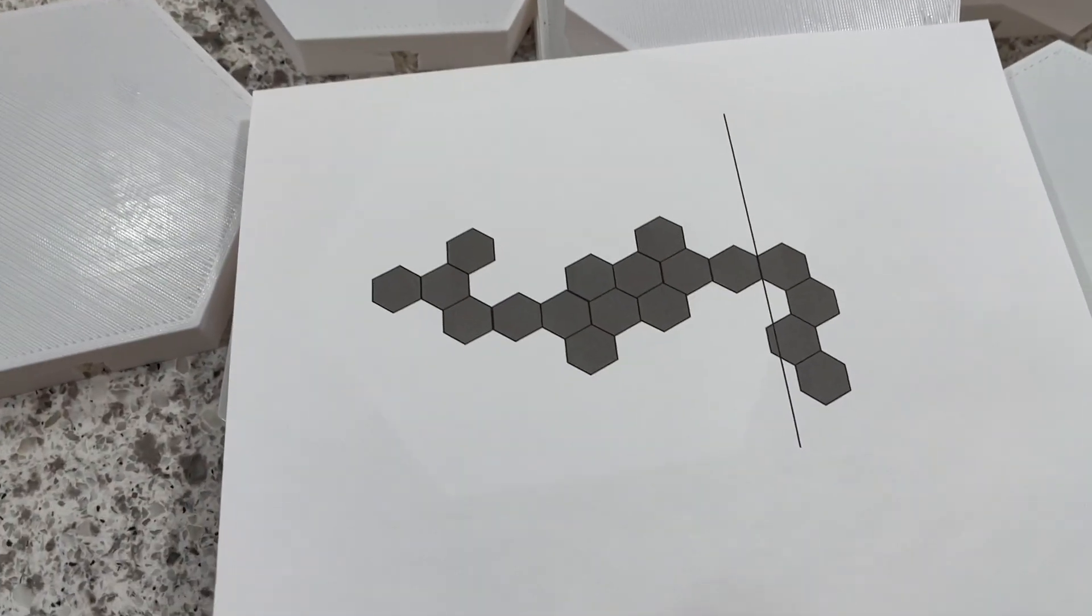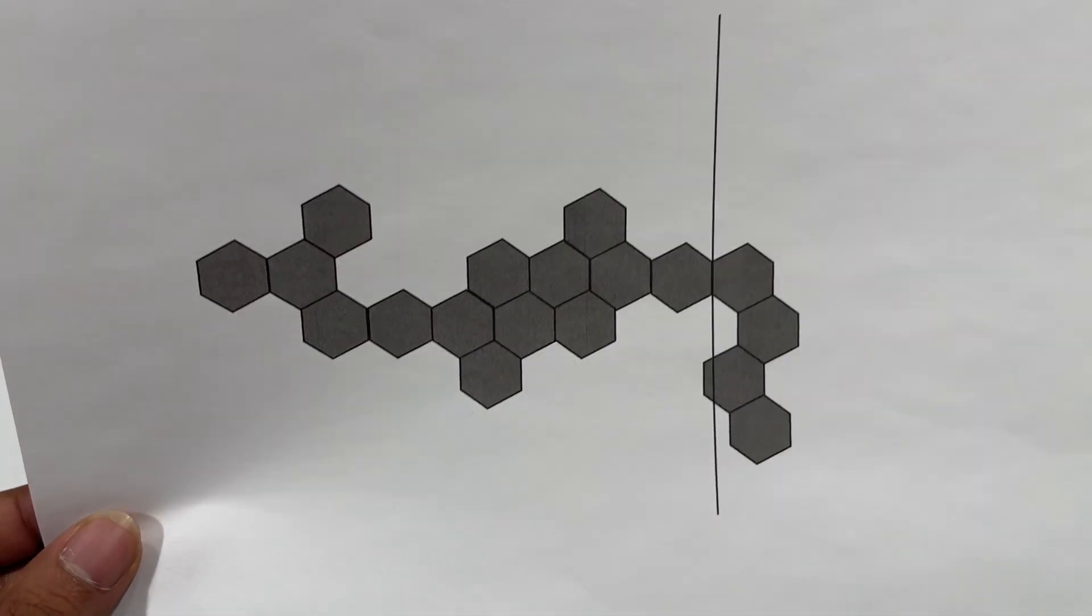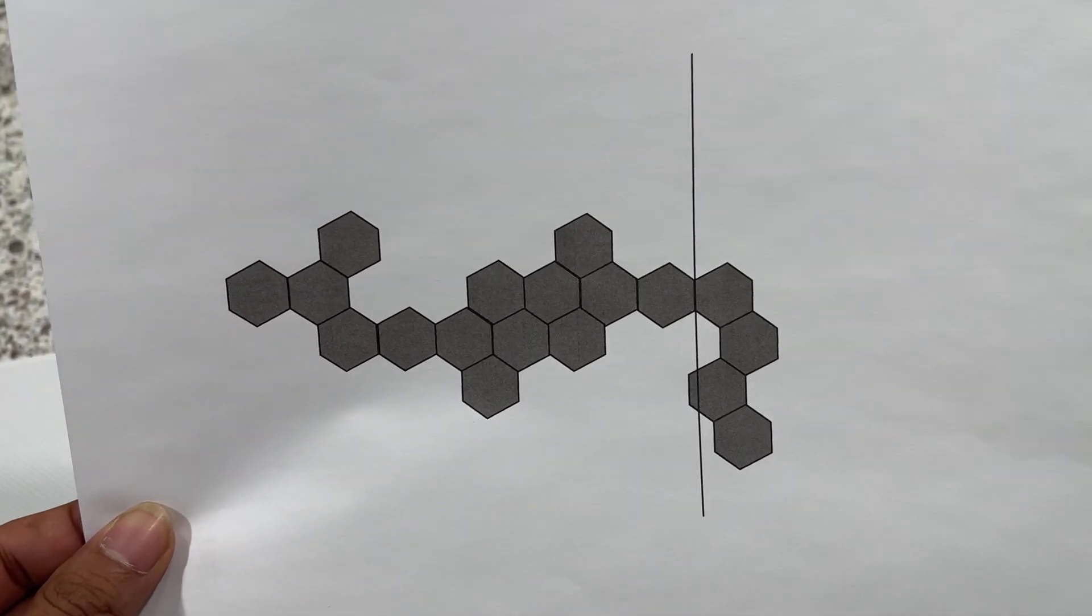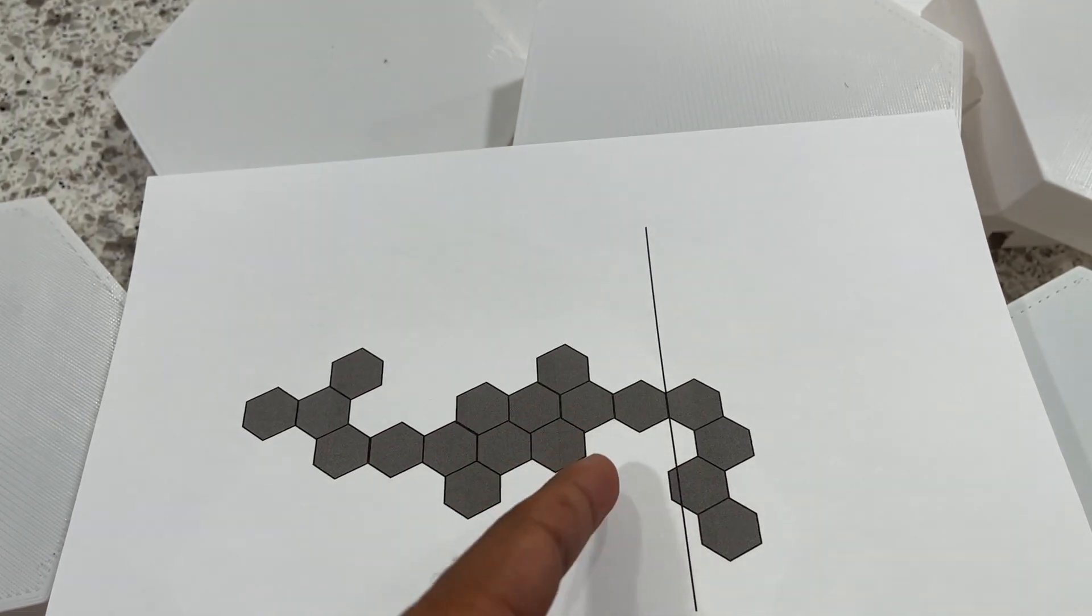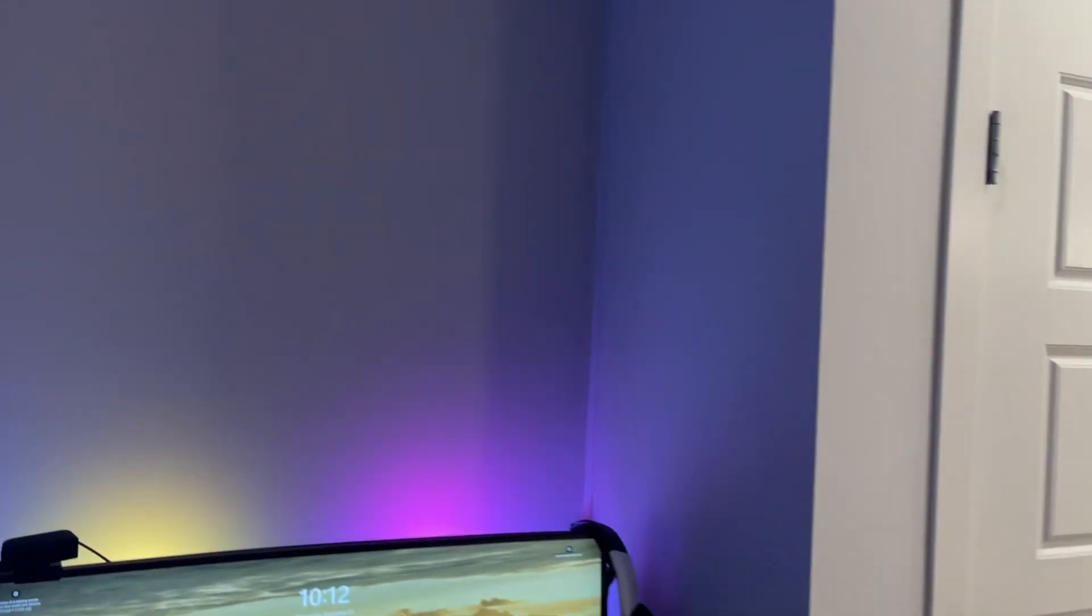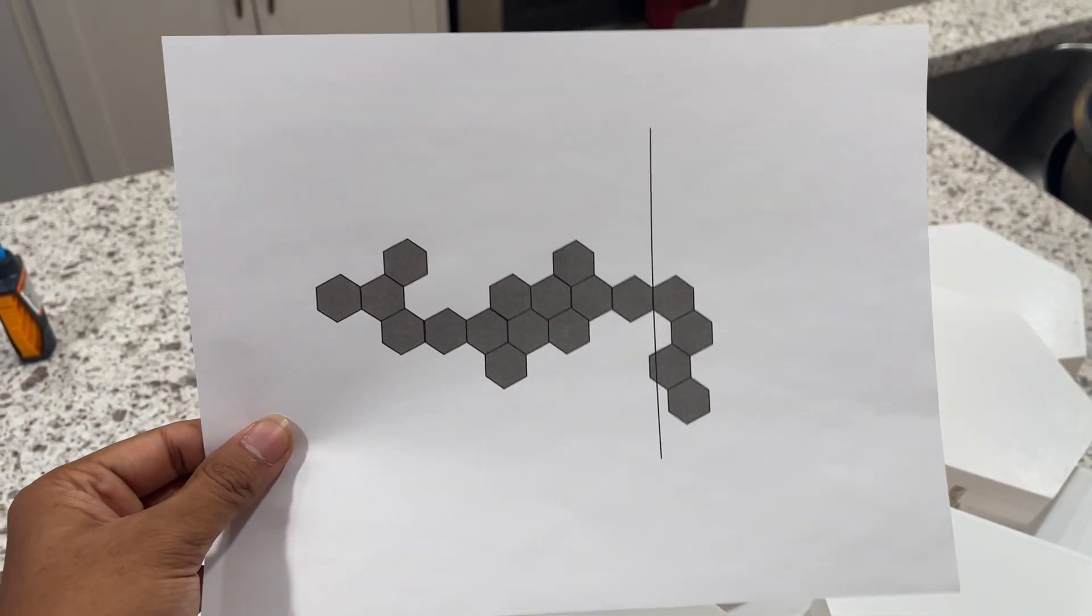But before gluing anything, I planned everything out on a paper. I sketched the entire layout to scale on paper. This made it much easier to visualize how the pieces would fit together. The straight line which you are seeing is basically to show the corner of my wall. If you are doing something like this, I would definitely recommend having a guide. It saves so much time.